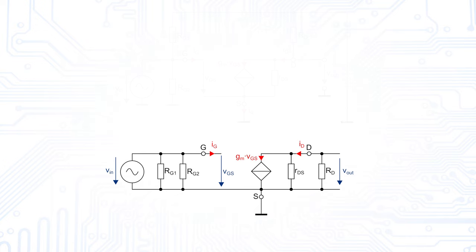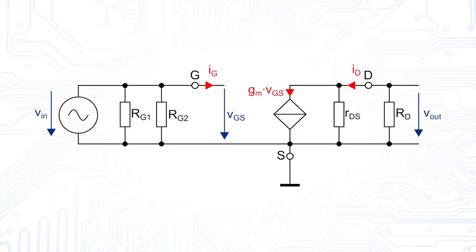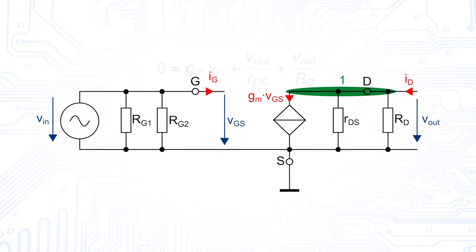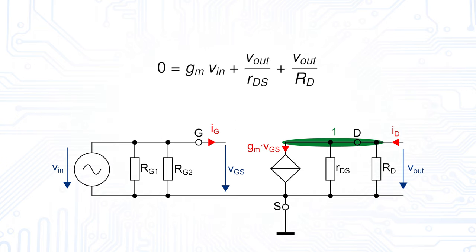For the voltage gain, we are interested in the ratio of Vout to Vin. To get this relation, we consider Kirchhoff's law and derive the node equation at node 1. As the drain current is zero, we get Gm times Vin plus Vout over Rds plus Vout over Rd.